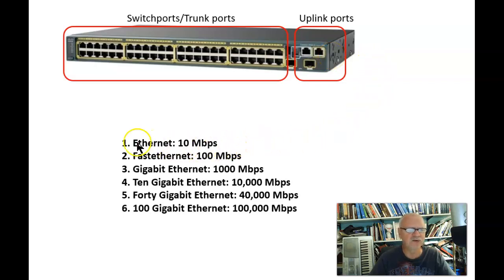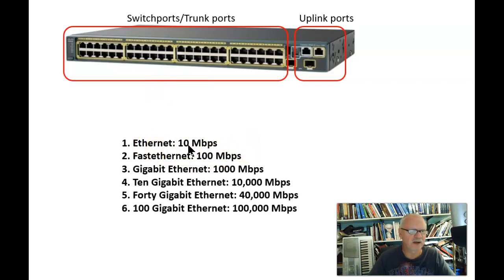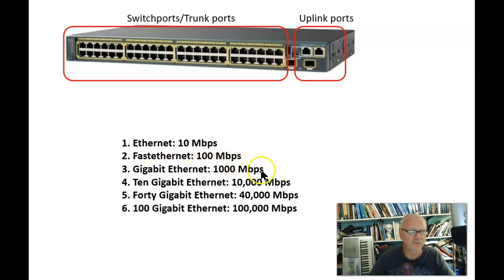There are various speeds that are typical speeds. You'll find these ports at Ethernet. Ethernet by definition is 10 megabits per second. Fast Ethernet by definition is 100 megabits per second. Gigabit Ethernet is 1000 megabits per second, because a thousand megabits is a gigabit.